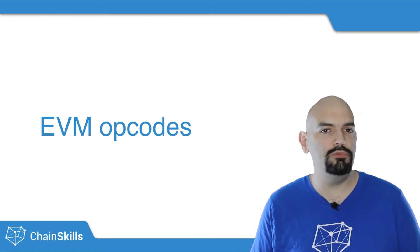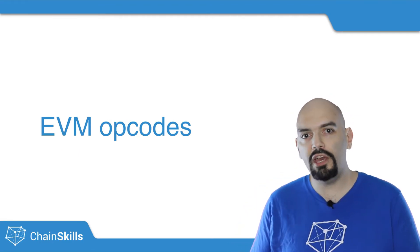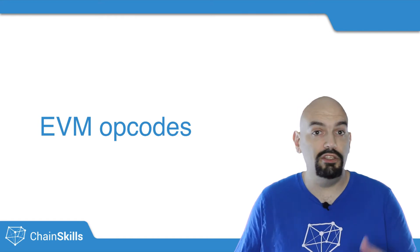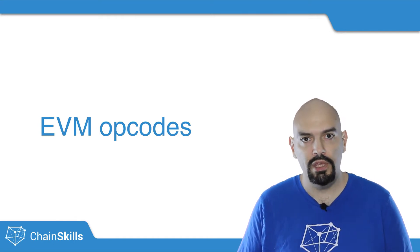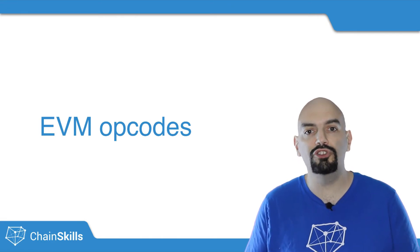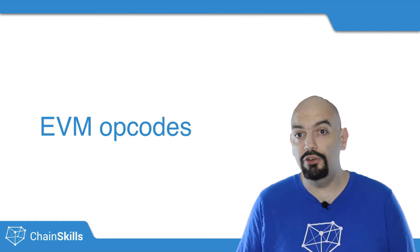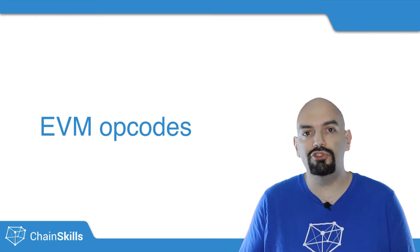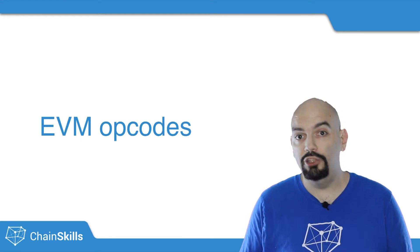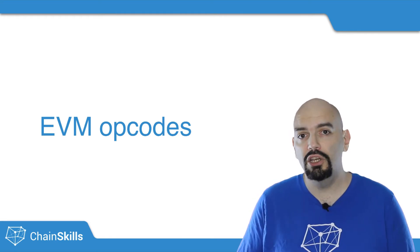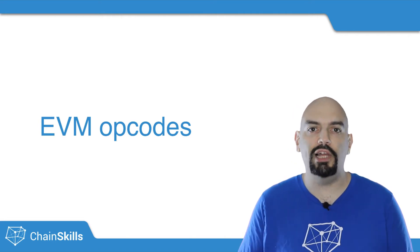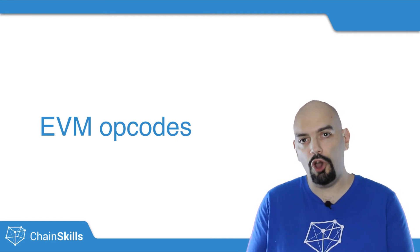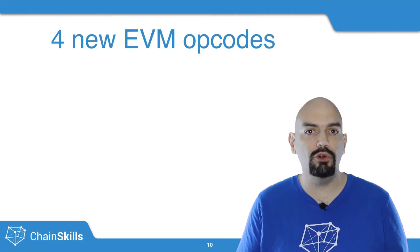The Byzantium release will bring four new EVM opcodes. The EVM, or Ethereum Virtual Machine, is like a generic processor running in software instead of hardware, similar to the Java Virtual Machine or Microsoft CLI. This makes it possible to run Ethereum nodes on any kind of computer and to change how this processor works over time. As with any processor, the EVM uses a series of instructions, also called opcodes. Each opcode has a given cost in gas to make sure smart contracts don't run wild and paralyze the network. When you compile a smart contract written in Solidity, it gets transformed into those instructions. Byzantium will bring four new such opcodes to the EVM.